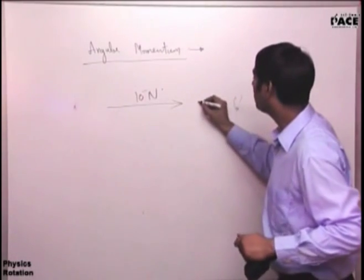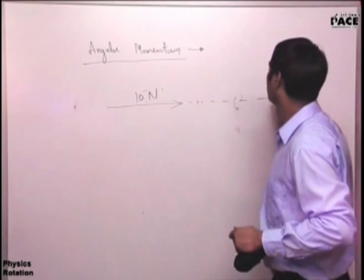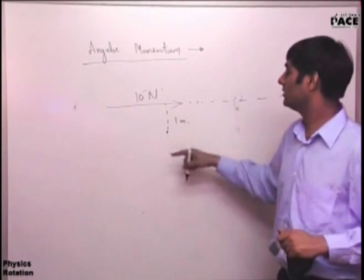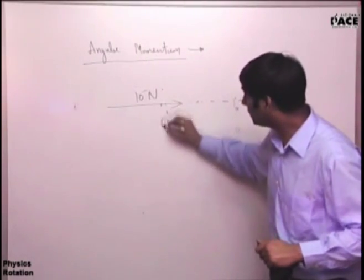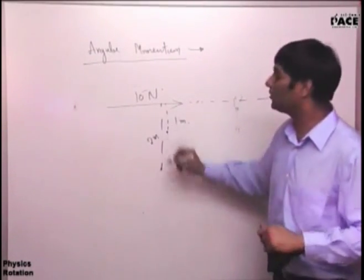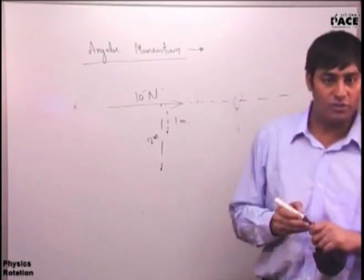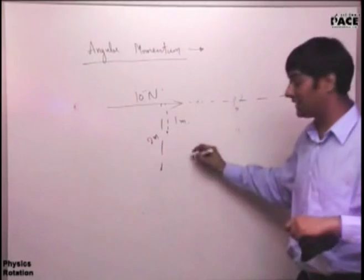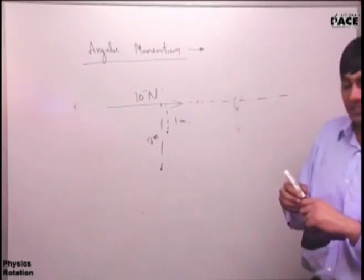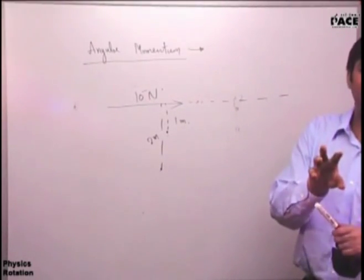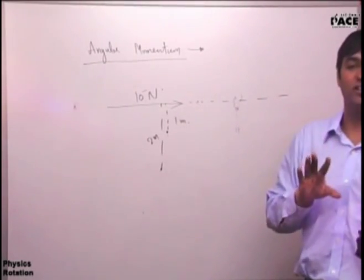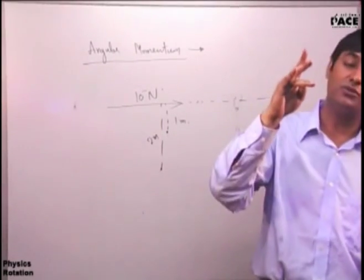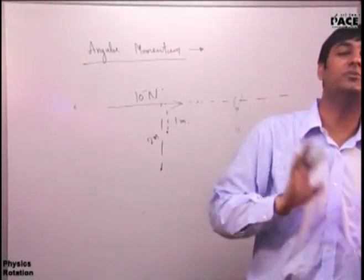For example, if I apply force at this hinge point itself, the torque about that point — the point through which the force is passing — will be zero. At a point 1 meter away, the torque will be 10 N·m. At a point 2 meters away, it will be 20 N·m. So torque depends not only on the force, but also on the distance — the point of application. It has two components: the force and the point about which we are turning.